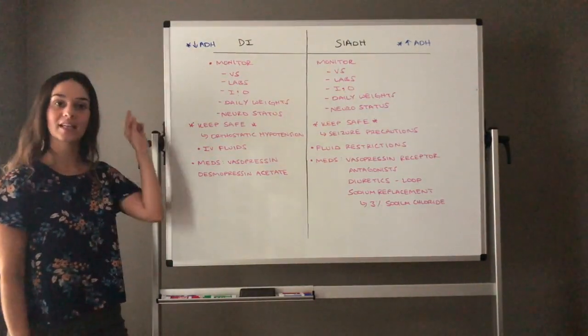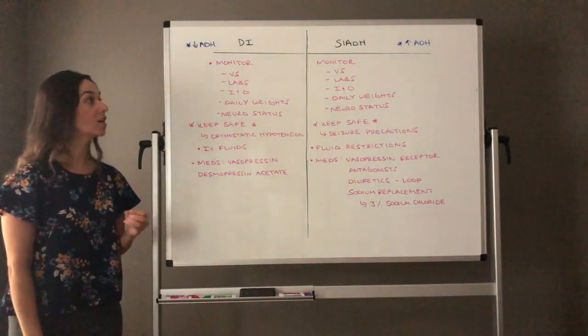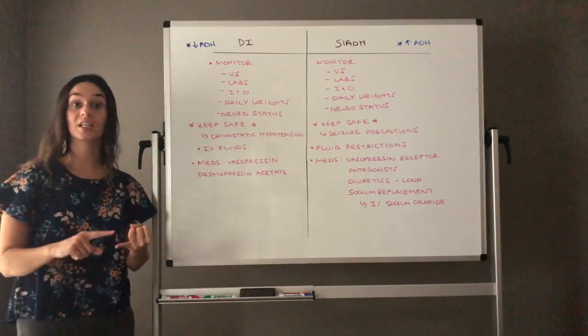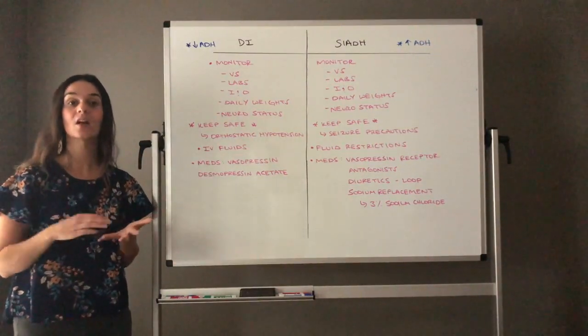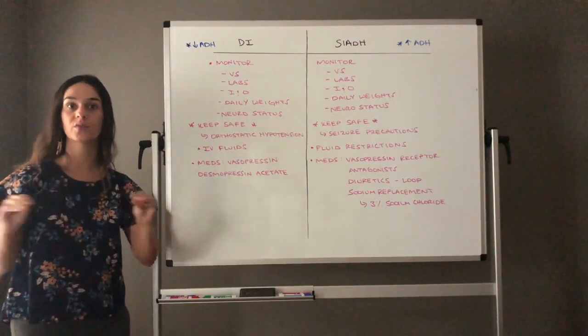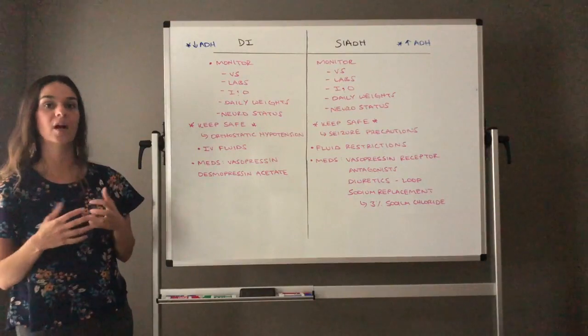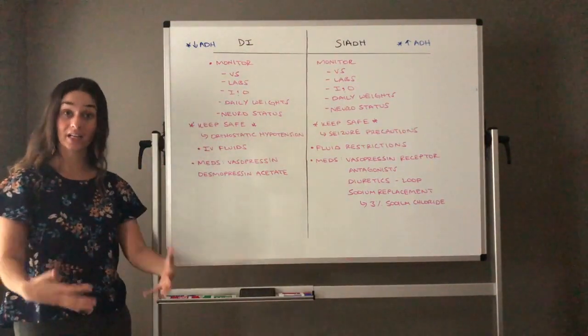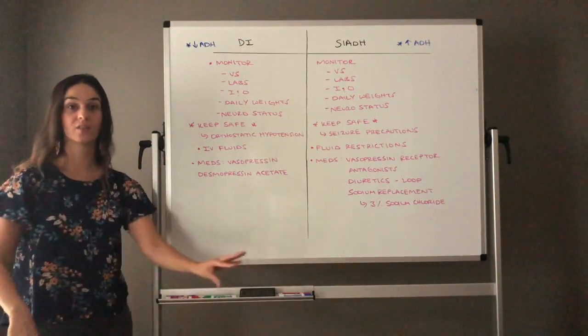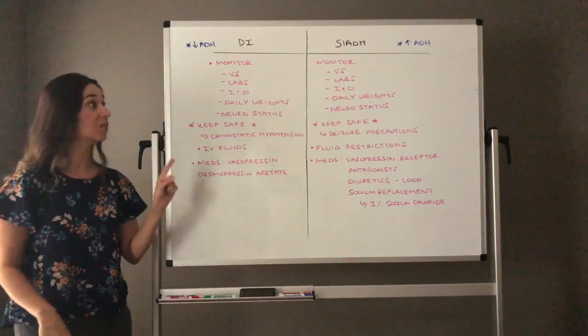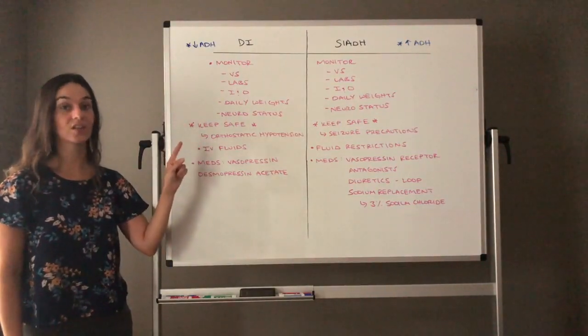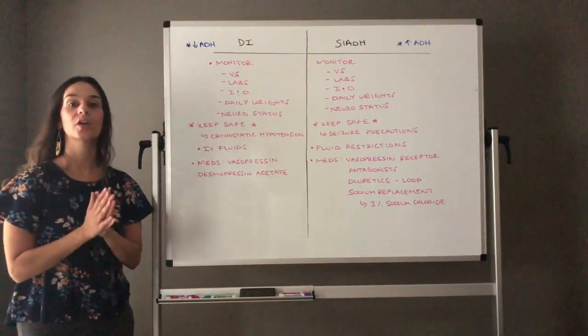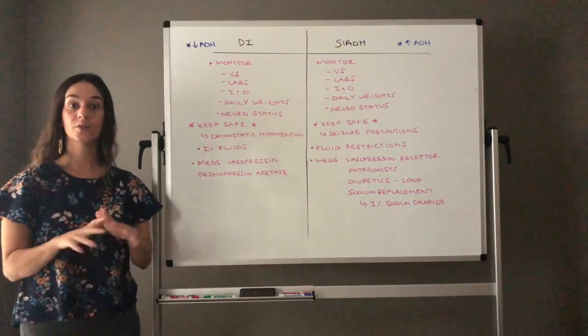So diabetes insipidus, again think about a dehydrated client. We of course need to monitor vital signs. We need to monitor their lab values. You need to be looking at sodium levels. Remember they are hypernatremic. We need to be looking at all the levels that monitor fluid volume status such as serum osmolality, urine osmolality. I's and O's because these diseases are characterized either by excessive urine output or very little urine output. And remember, our clients have to make 30 mLs of urine per hour to show that we have good kidney function.